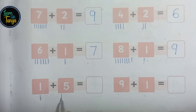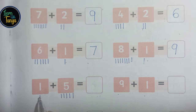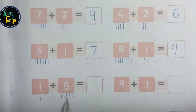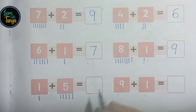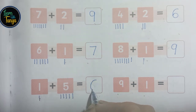1, 2, 3, 4, 5, 6. 1, 2, 3, 4, 5, 6. 1 plus 5, 6.